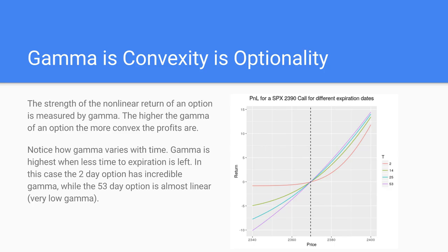Gamma is another way of measuring convexity — it is a mathematical parameter that captures the shape of that profit and loss chart with a single value. Gamma is a measurement of convexity, which is also a measurement of optionality when we are talking about options. In this chart I am plotting the same call option but with different expiration dates. The red line is two days to expiration, the green line is 14, the blue line is 25, and the purple one is about 53 days.